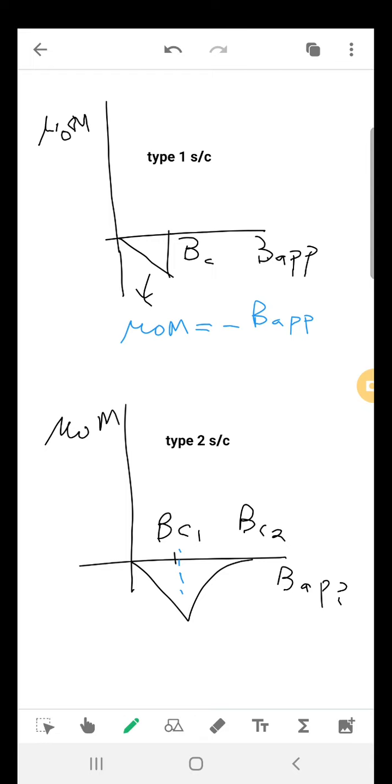It totally vanishes after it has crossed Bc2, the second critical value of magnetic field. So this is type 1 and this is type 2.